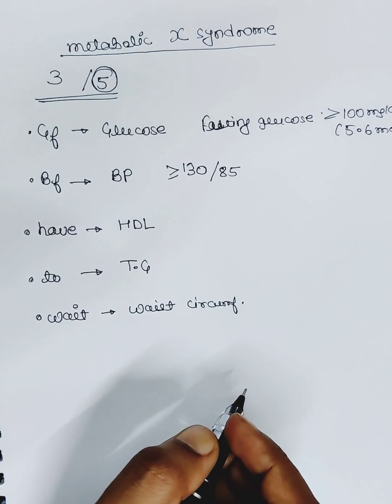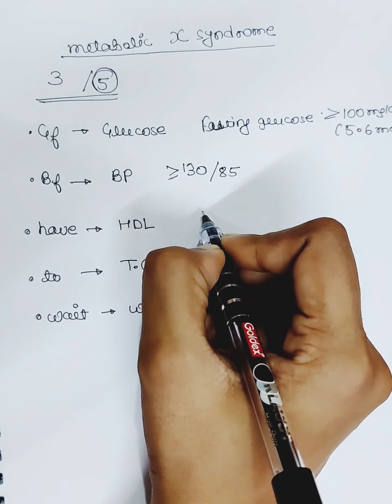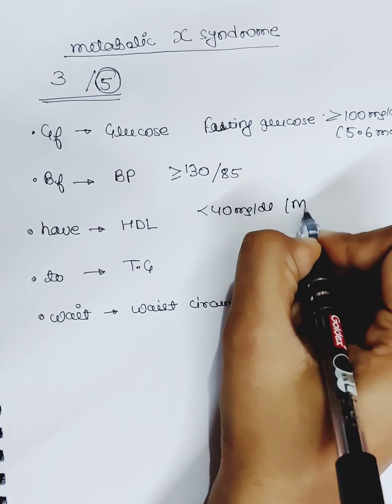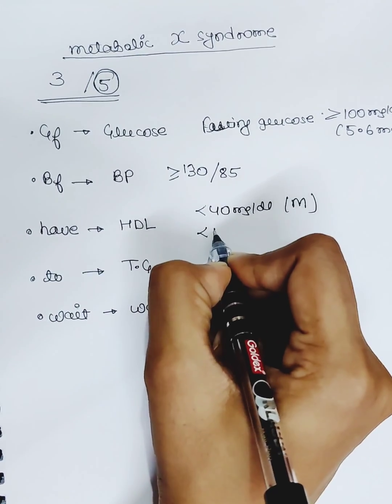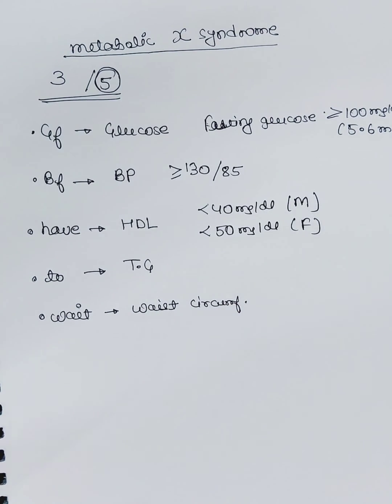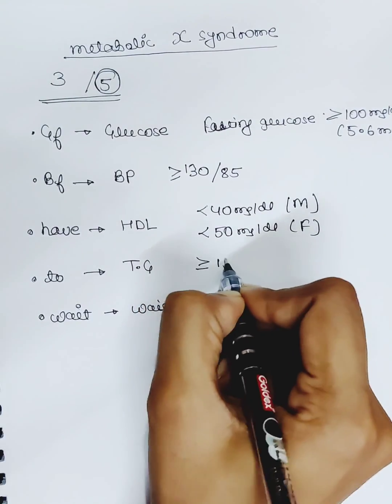H for HDL. HDL cholesterol for males, the cutoff is less than 40 milligram per dL, and for females less than 50 milligram per dL. Triglycerides - serum triglyceride should be more than 150 milligram per dL.